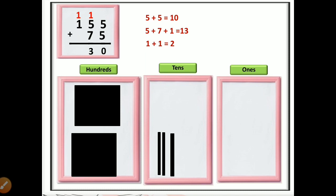Finally we do the addition of the hundreds place: 1 plus 1 equals 2. There are two bigger square blocks in the hundreds place, so 2 comes in the hundreds place. 230 is our answer.